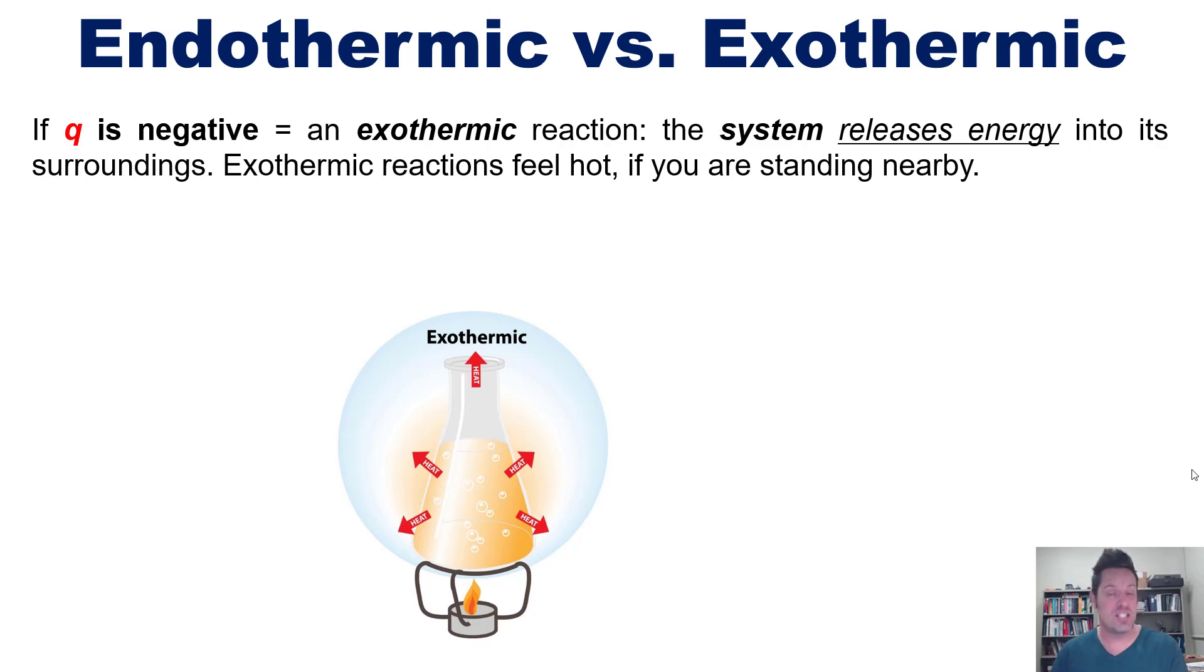So the combustion of gasoline, for example, is an exothermic chemical reaction. And you can tell because if you're standing nearby, you can feel the heat ebbing off of it, which means that that system, that chemical reaction, is giving heat off to its surroundings. Ergo, it is exothermic.